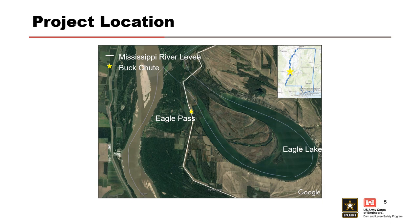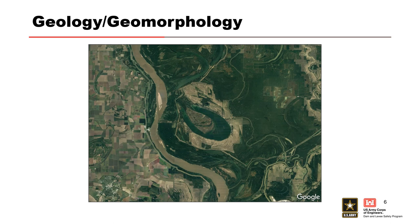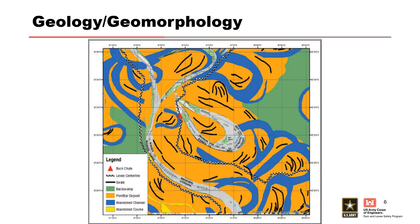A chute is a surface water flow path that typically allows flood water to traverse a low section of land. In this case, Buck Chute is a batcher channel that connected Eagle Pass to Eagle Lake prior to construction of the main stem levee. Buck Chute is located in the Yazoo Basin within the lower Mississippi River Valley, which is characterized by both braided and meandering alluvial deposits. This meandering system is characterized by oxbow lakes, as well as point bar, swale, abandoned channel, abandoned course, and back swamp deposits.